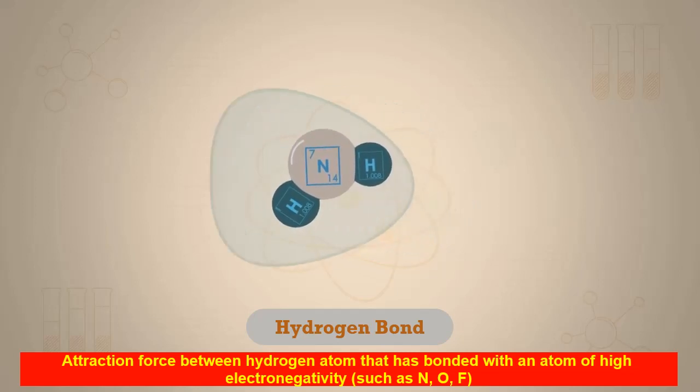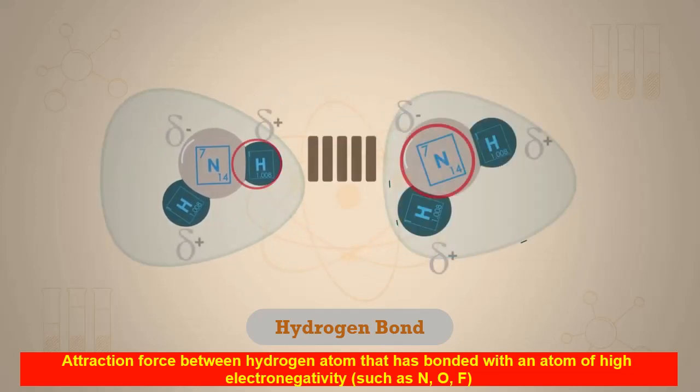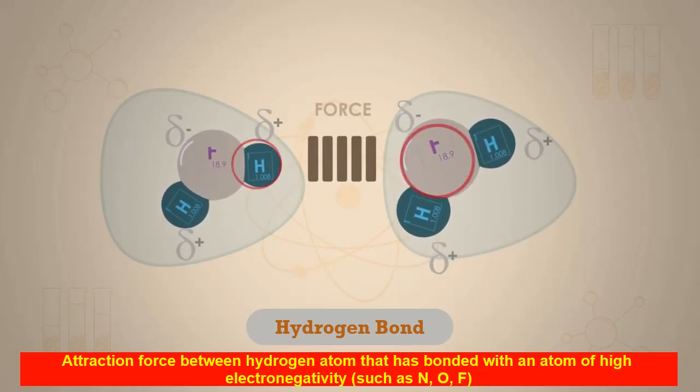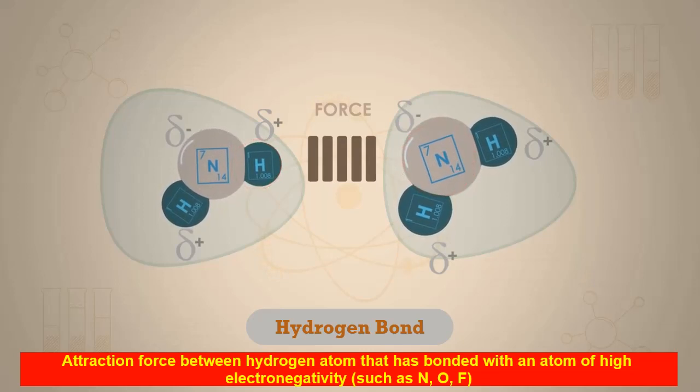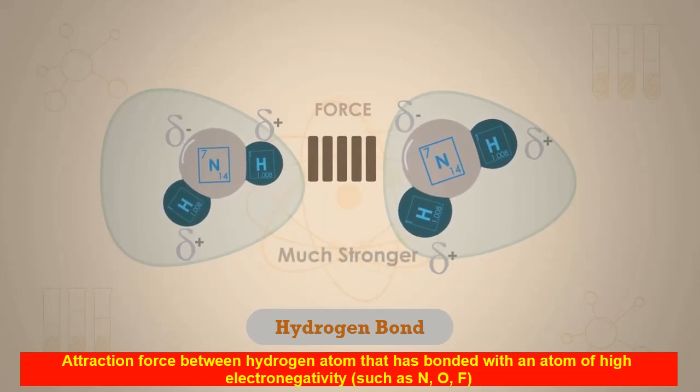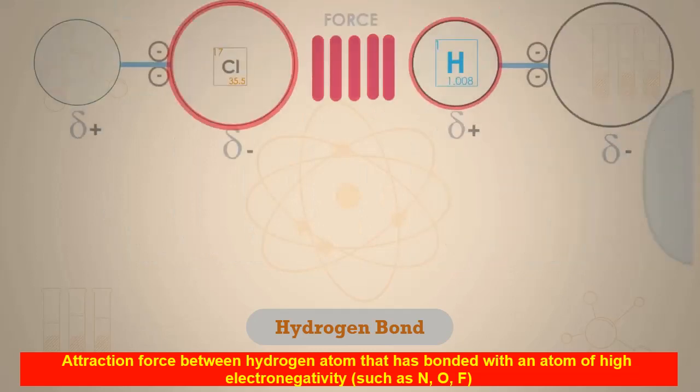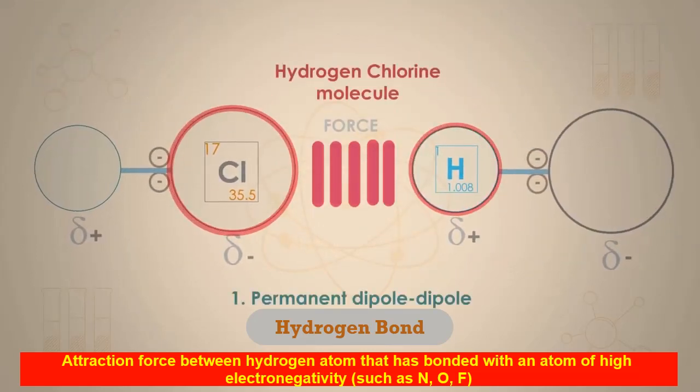Thus, the attraction between the electron-deficient H-delta-positive of one molecule and the lone pair of electrons on a fluorine, oxygen, or nitrogen atom of another molecule is much stronger than the permanent dipole-dipole attraction between hydrogen chloride molecules.